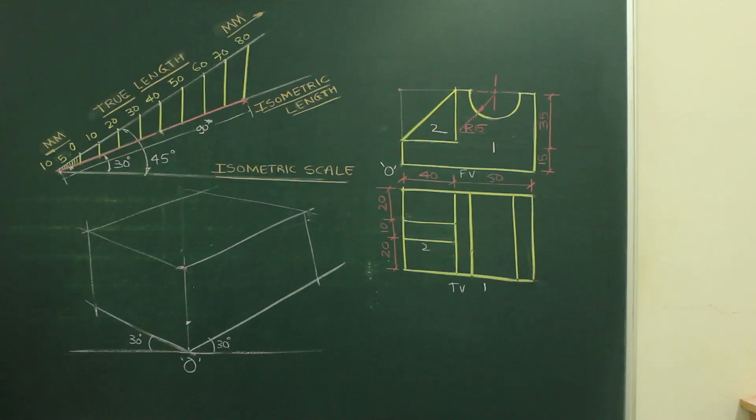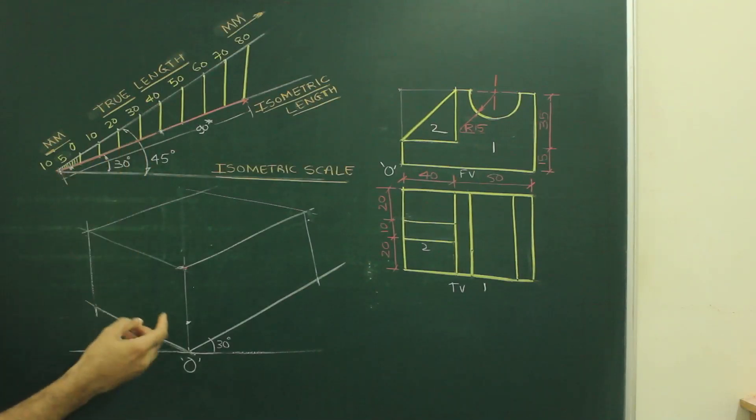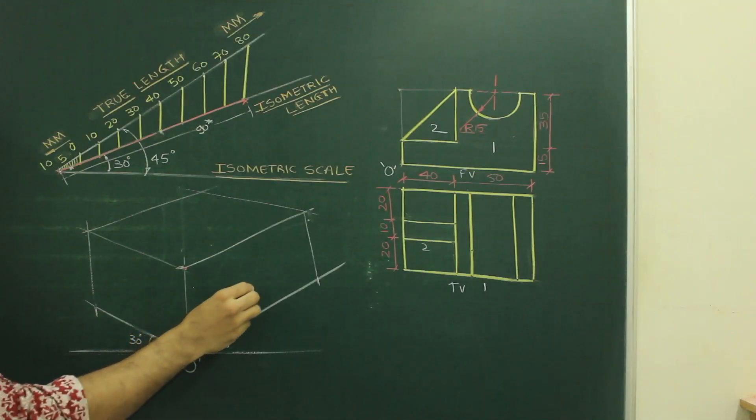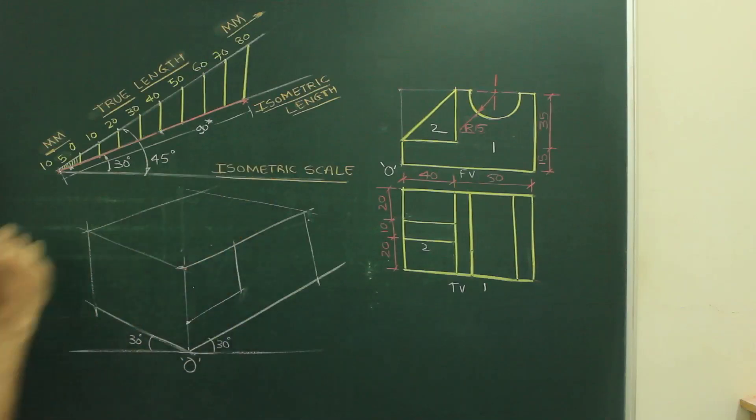Same way, they have given 40 and 50. So what I will do? I can take 40 from here to here. See this. This is 40. That I can take and I can cut on this side. I can go up. So I got front view.